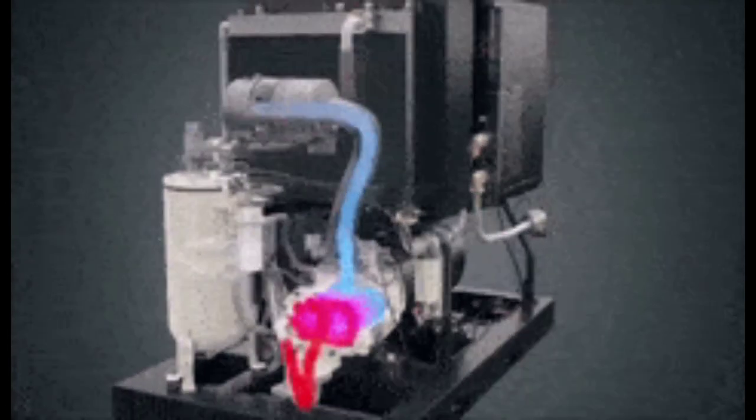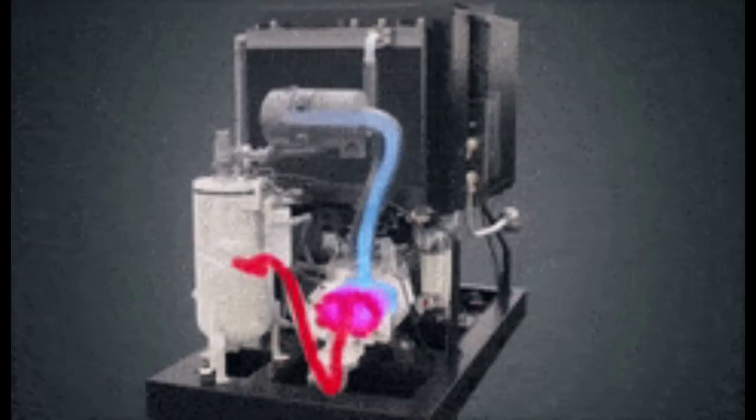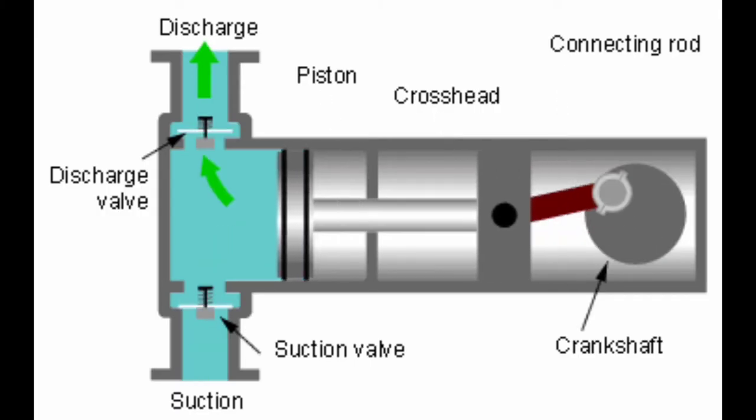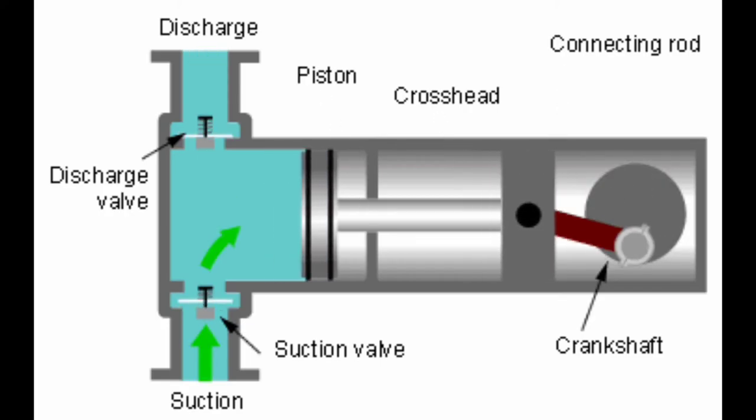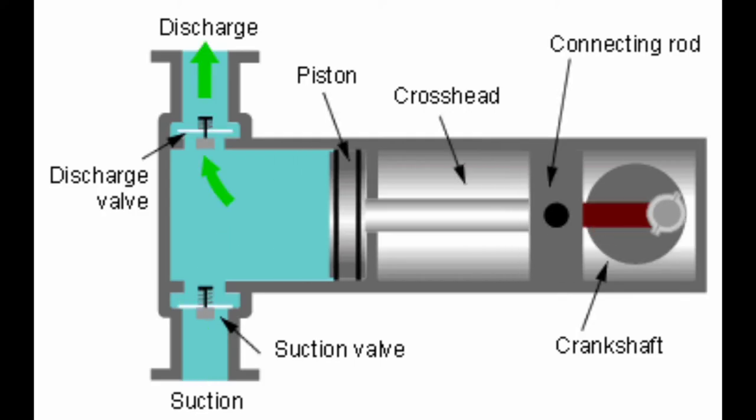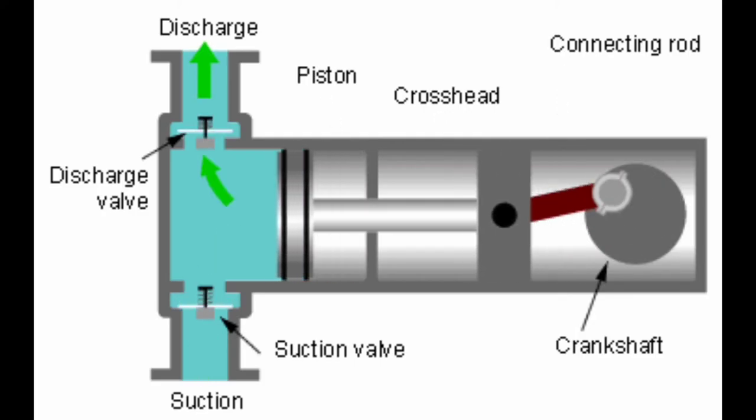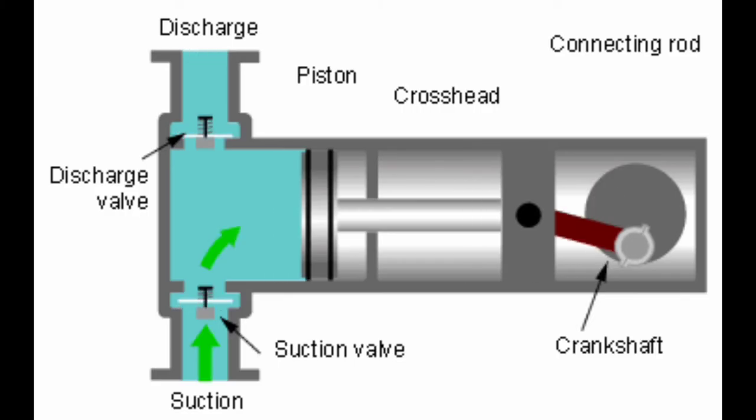As with pumps, compressors are divided into centrifugal or dynamic or kinetic and positive displacement types. But where pumps are predominantly represented by centrifugal varieties, compressors are more often of the positive displacement type. They can range in size from the fits-in-a-glove-box unit that inflates tires to the giant reciprocating or turbo compressor machines found in pipeline service.